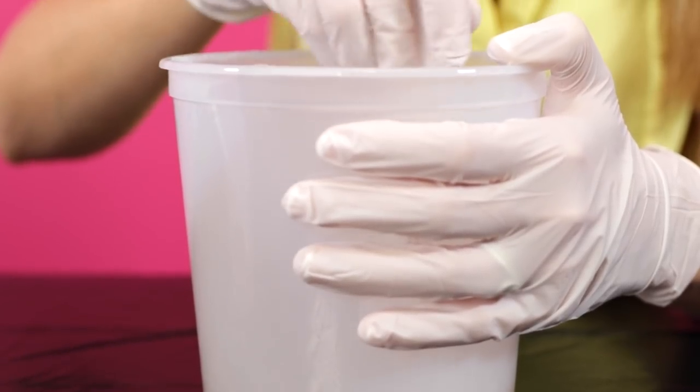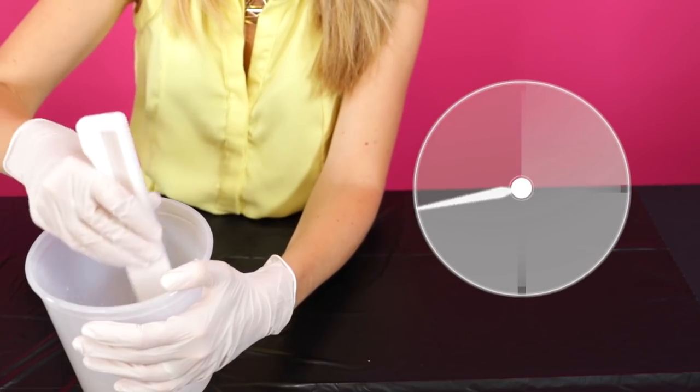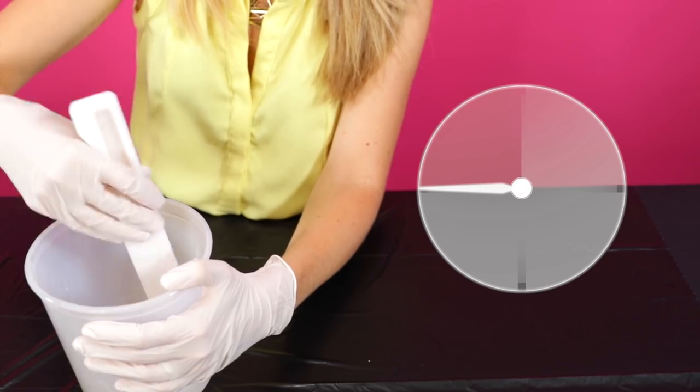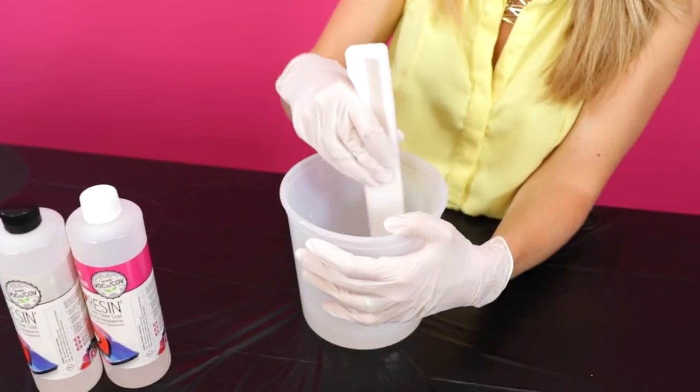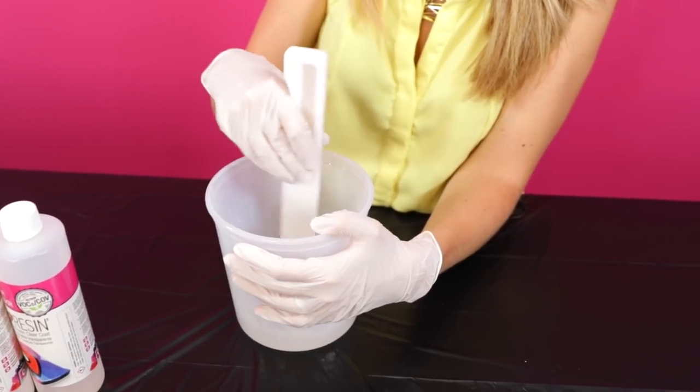Once you've mixed both the resin and hardener together, you'll have about 45 minutes of working time to spread it before it starts to cure. If your mixture is warmer than room temperature, your working time and cure time will be decreased.